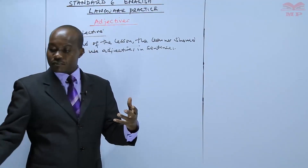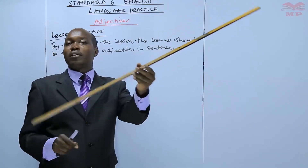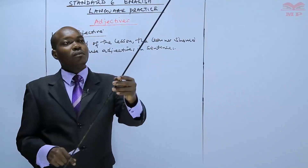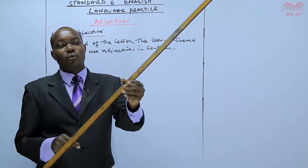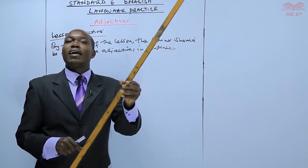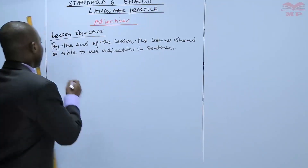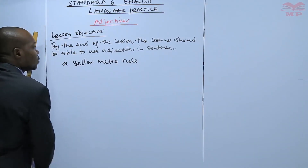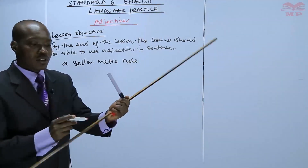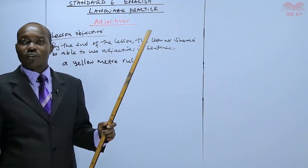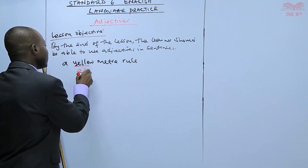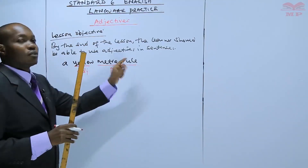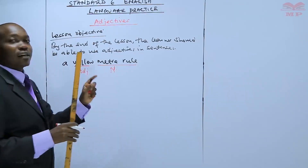For example, this meter rule is a noun — it is an object. I want to describe this meter rule. What's the color of this meter rule? You can see it is yellow. So when you say a yellow meter rule, the word yellow describes the color of this meter rule. So yellow is an adjective, and meter rule is a noun. Of course, meter rule is also a compound noun, but yellow is an adjective.